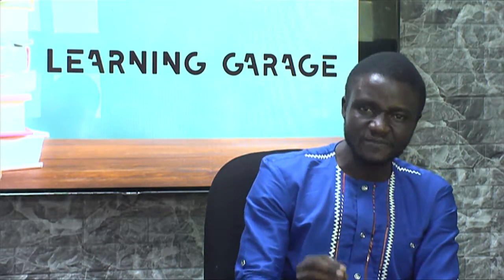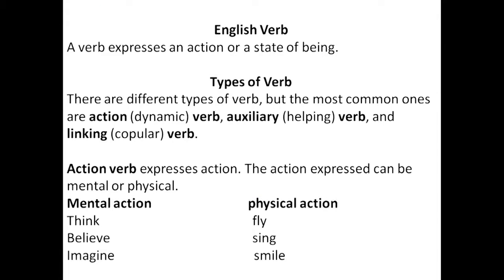Action verb is the kind of verb that expresses an action. The action expressed can either be mental or physical — meaning the action will take place physically or will happen in our mind. Verbs like think, believe, imagine are mental action — activities that take place in the mind. But if you contrast think to fly, fly is physical. Believe contrasted to see — seeing is physical. Imagine contrasted to smile — smile is physical. But they are all action verbs. The action expressed could be either mental or physical.